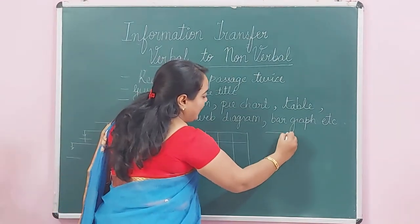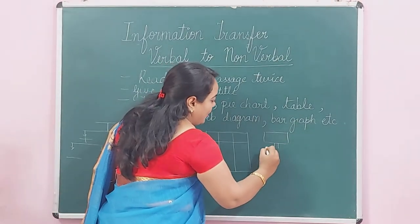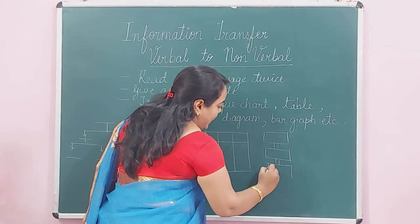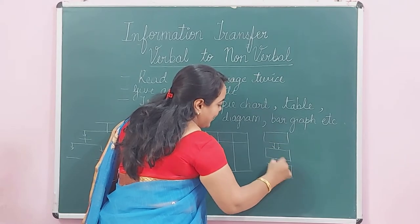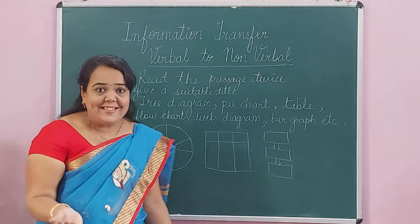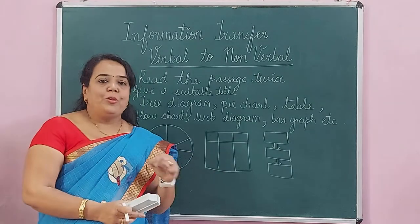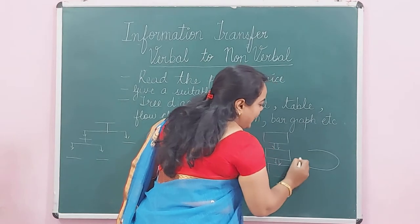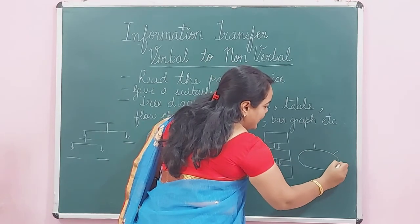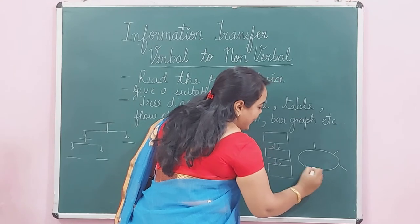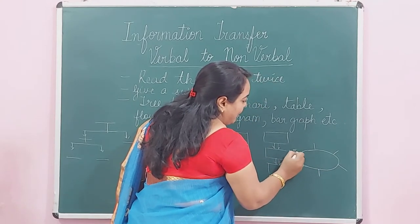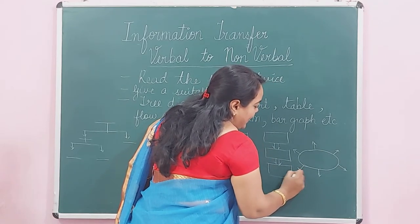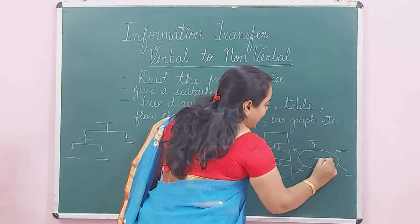A flow chart uses rectangular boxes. When a sequence, steps, or a process is given, you draw a flow chart. A web diagram can be drawn more flexibly — for example, you can draw a box with the main topic like 'users of mobile phone,' write the title, and branch out the answers in short form around it.